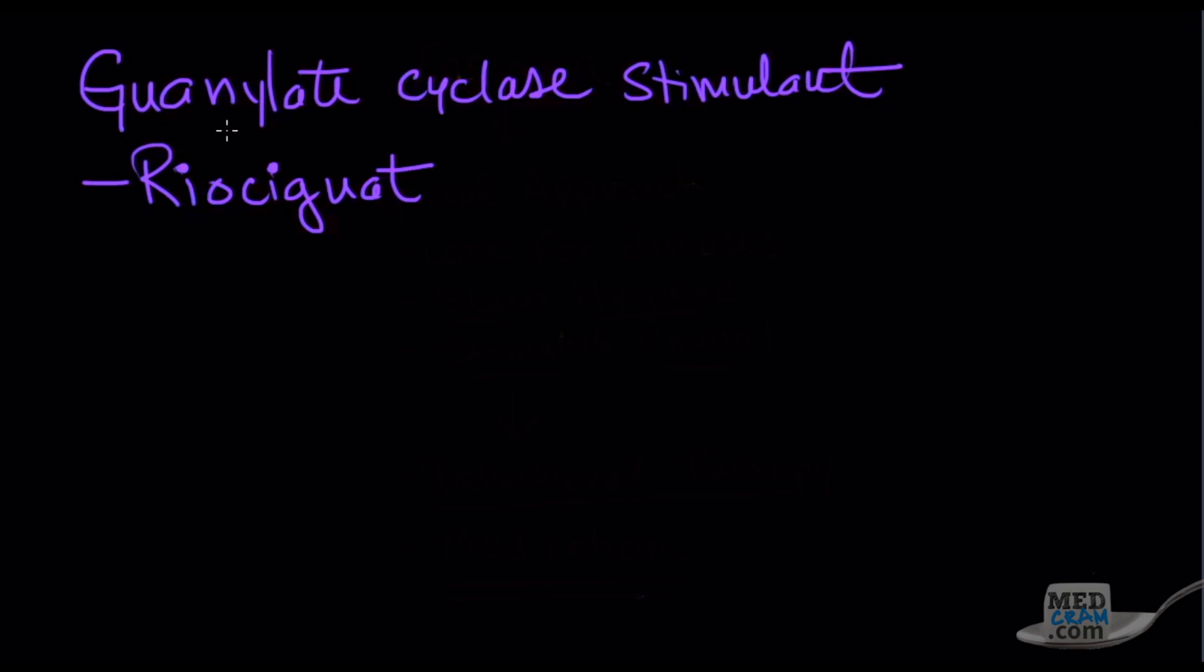The last mechanism that we're going to look at is the guanylate cyclase direct stimulants. Riociguat is one of the medications that is FDA approved. It's a direct stimulator of the nitric oxide receptor. So it increases nitric oxide just like the phosphodiesterase inhibitors do, but they do it in a different way. They have a dual mode of action. Not only do they increase the nitric oxide receptor, they also increase the sensitivity of the sGC to endogenous nitric oxide, which is a pulmonary vasodilator. So they also directly stimulate the receptor to mimic the action of nitric oxide.